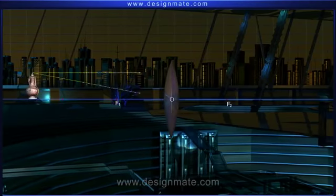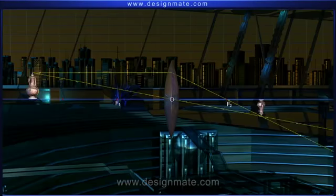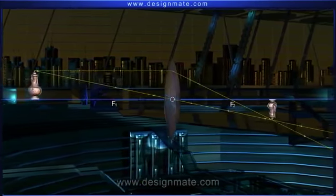For different positions of the object, a convex lens forms images of varying sizes and nature at different locations.